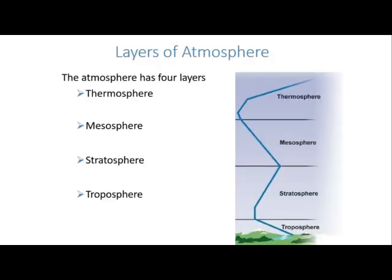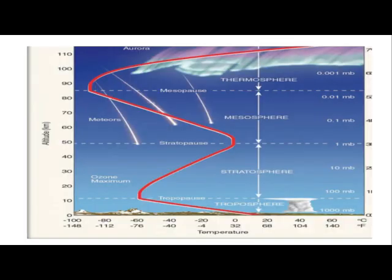Here are the layers of the atmosphere. The atmosphere has four major layers. First, we have the thermosphere, the mesosphere, the stratosphere, and the troposphere. Starting from the bottom, we begin with the troposphere, followed by the stratosphere, then the mesosphere, and lastly the thermosphere.